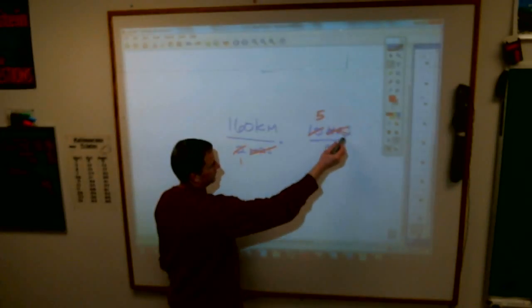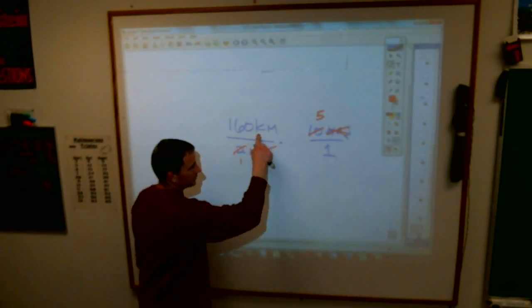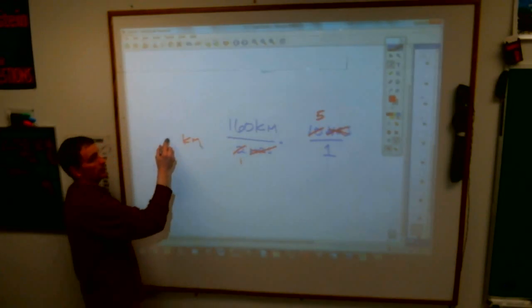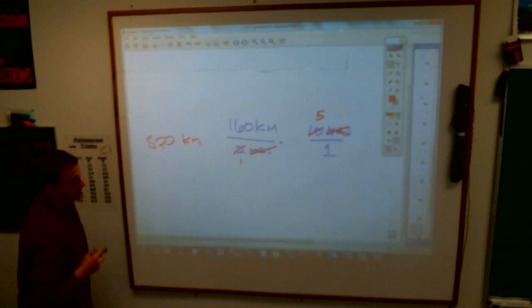So what are the labels you're left with when you're finished? Well, the label you're left with is kilometers. And if you multiply 5 times 160, you end up with what? 800, I think. 800 kilometers.